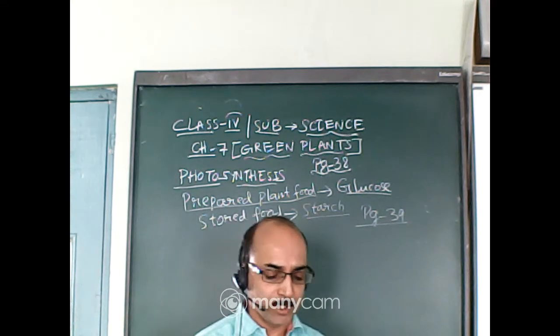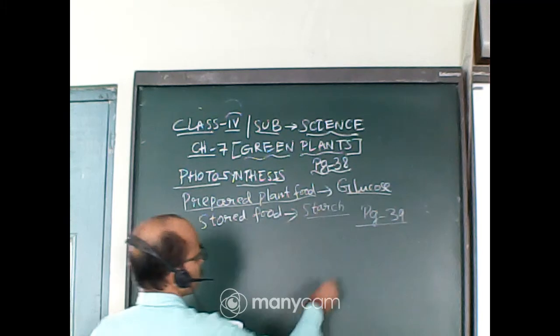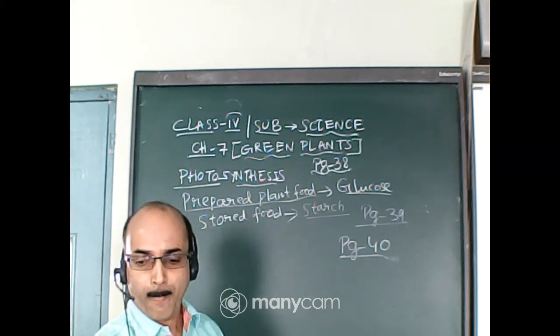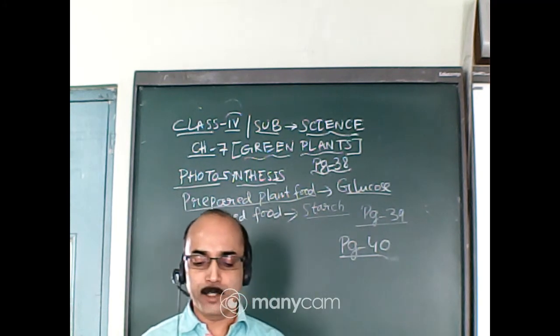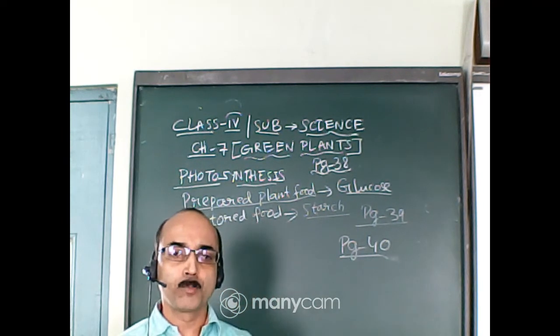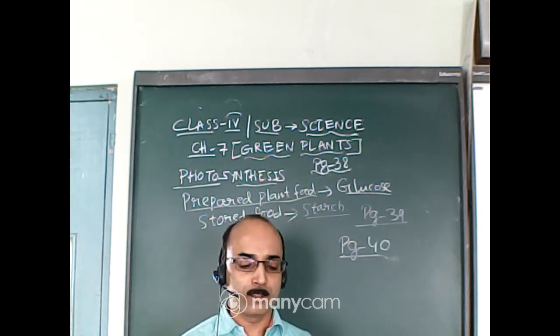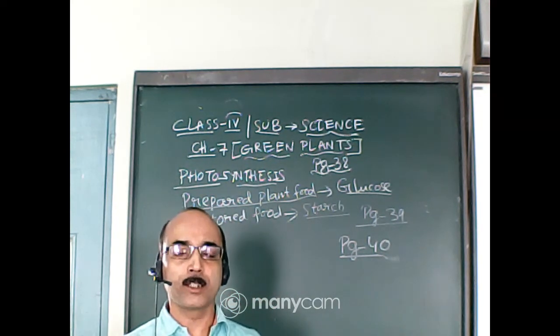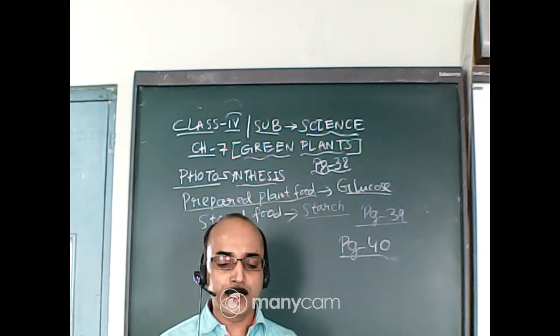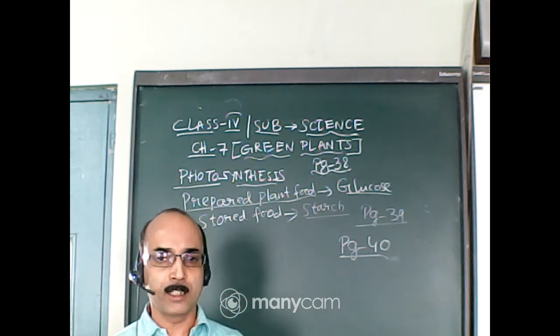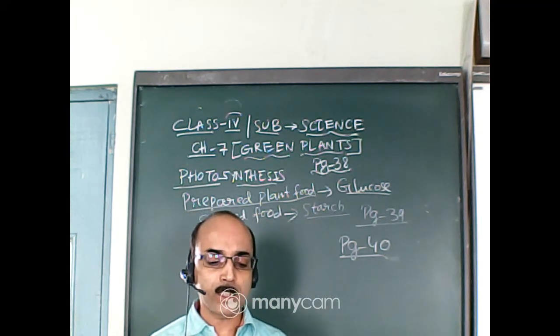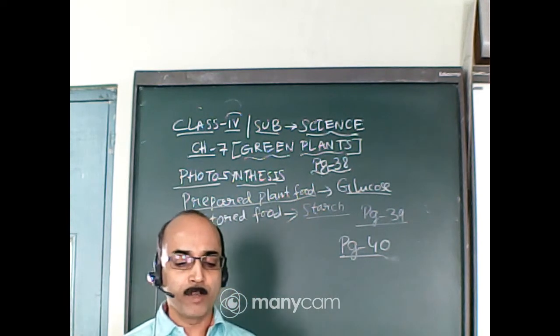Then there is one more activity. To show that chlorophyll is necessary for photosynthesis. Take a plant with variegated leaves, that is part green and part white leaves, different colors. Keep it in sunlight for 2-3 hours. Pluck a leaf from this plant, a variegated leaf.